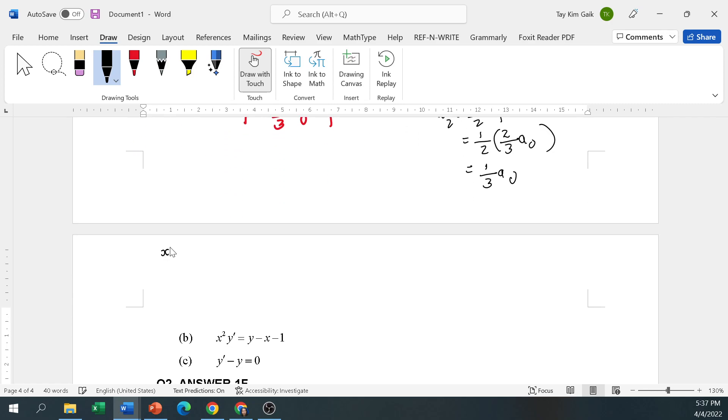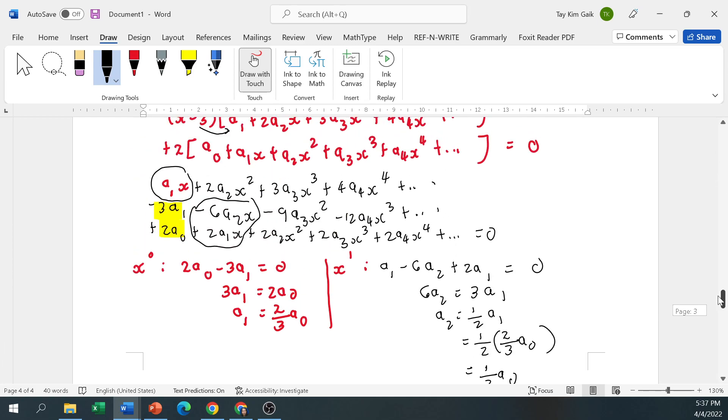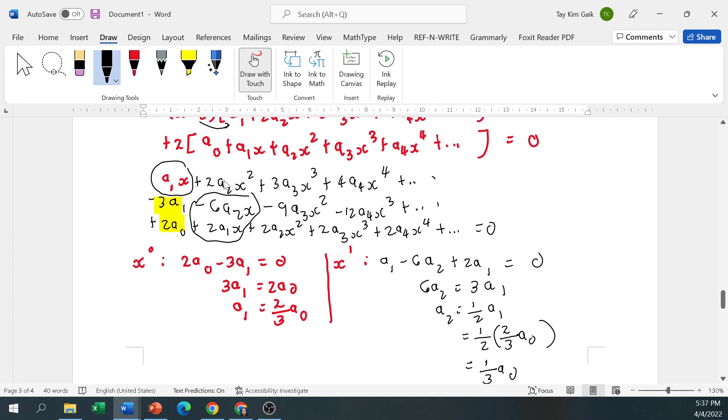Okay, if you want further like x power 2. We got 2a2 minus 9a3 plus 2a2. 2a2 total, 4a2 equal to 9a3.